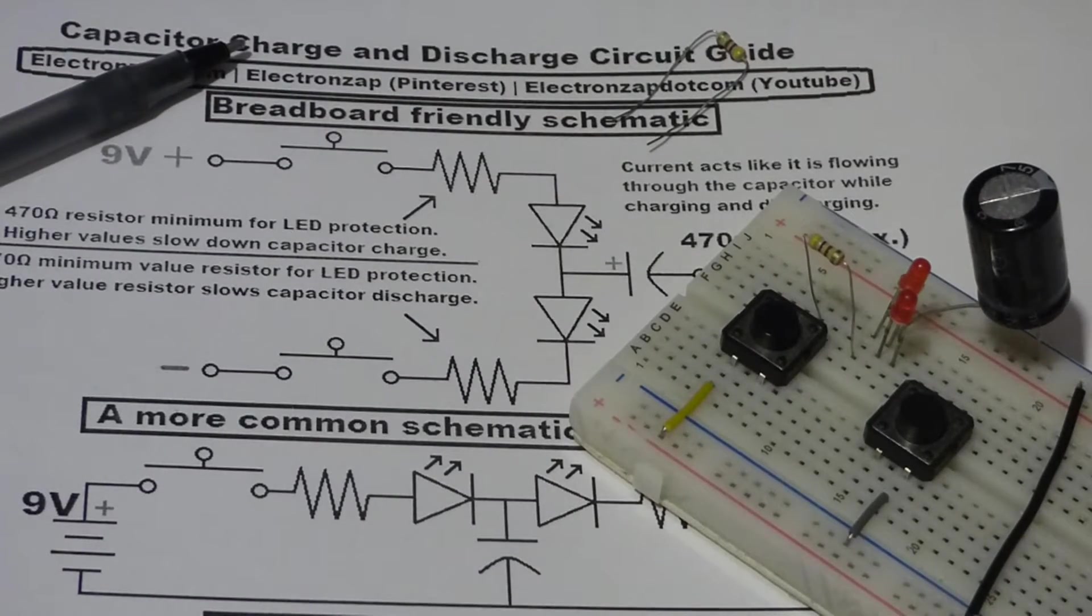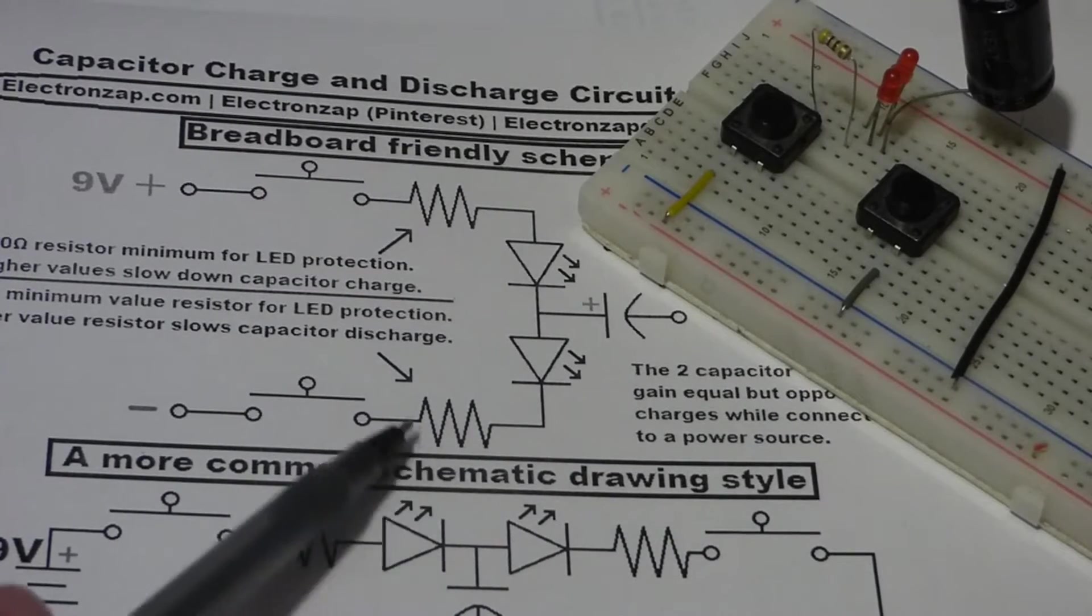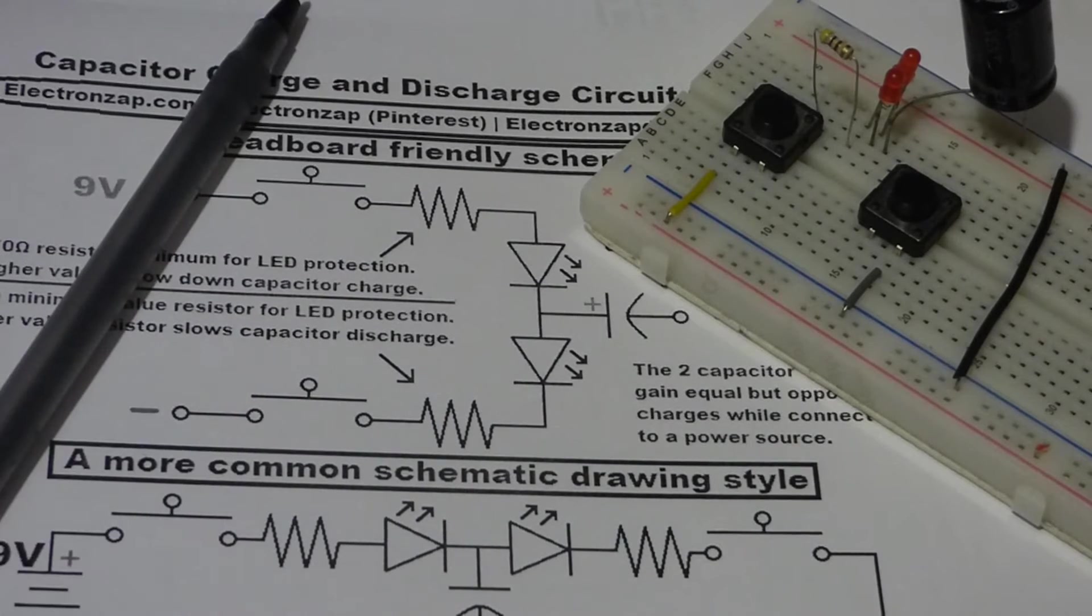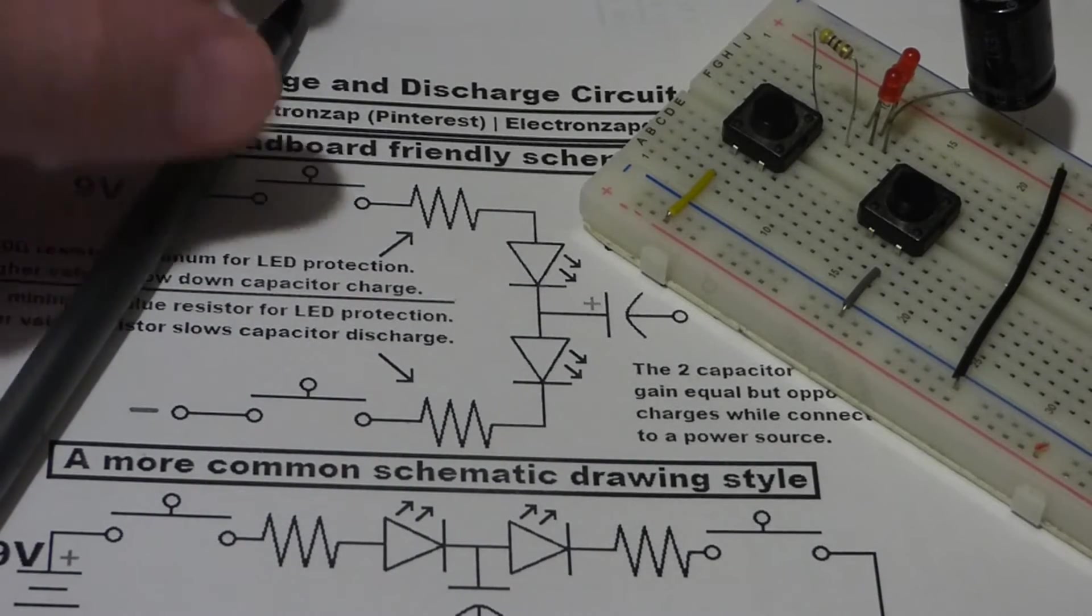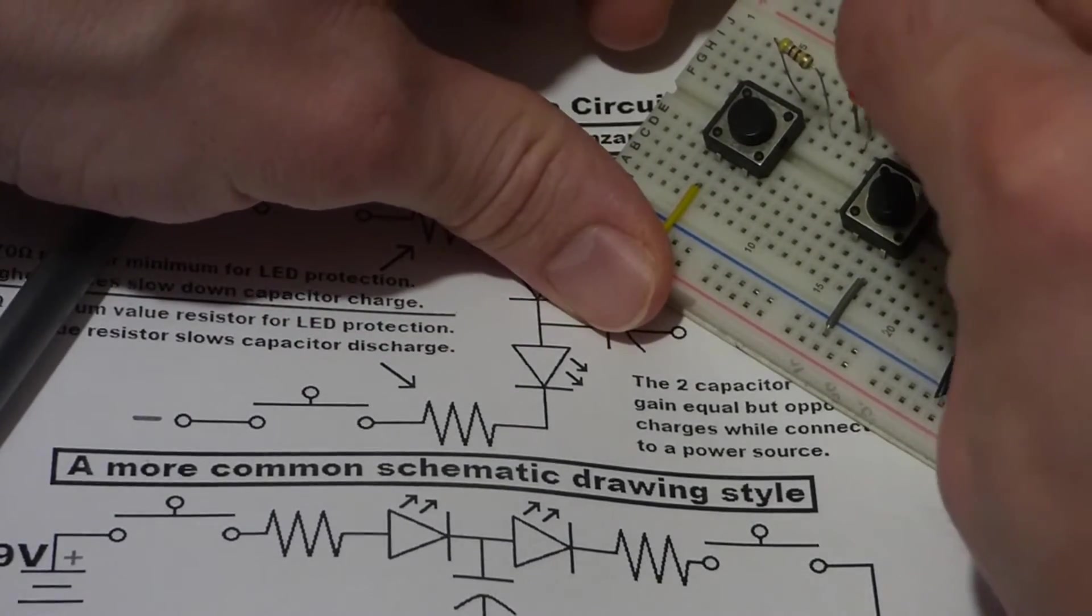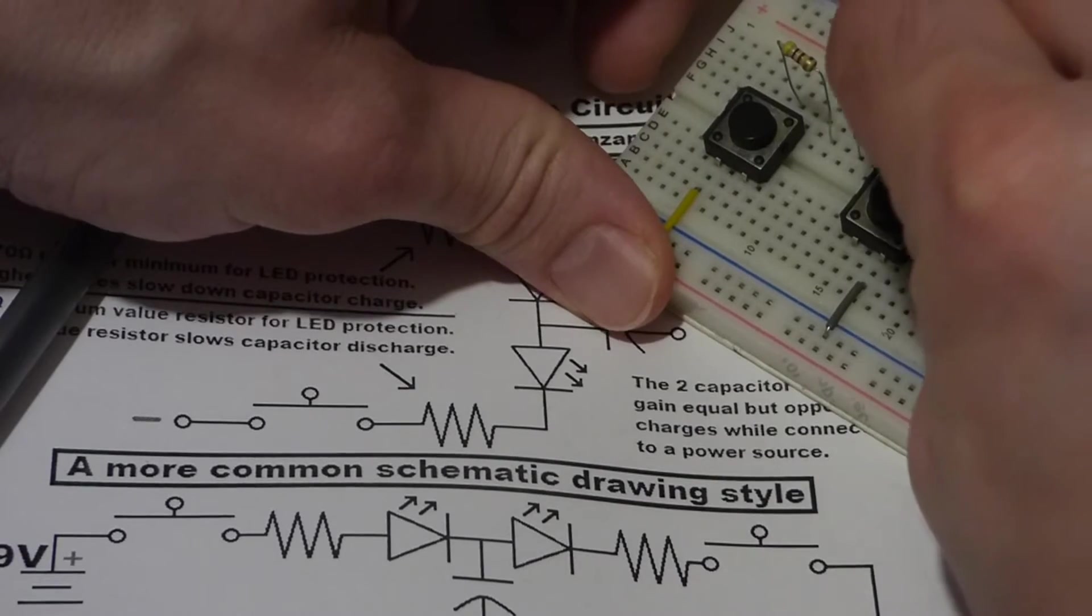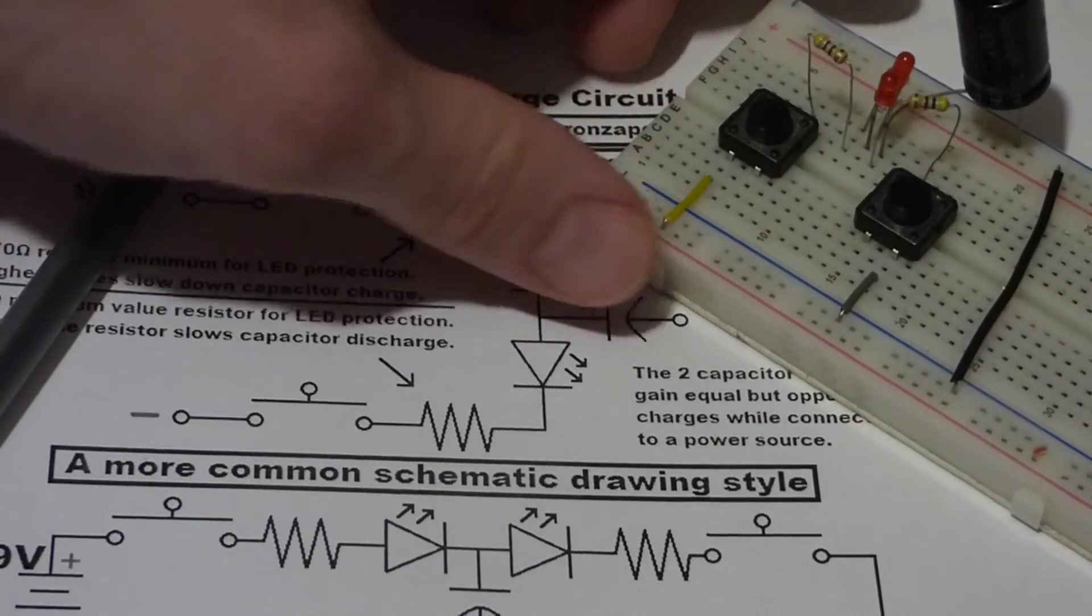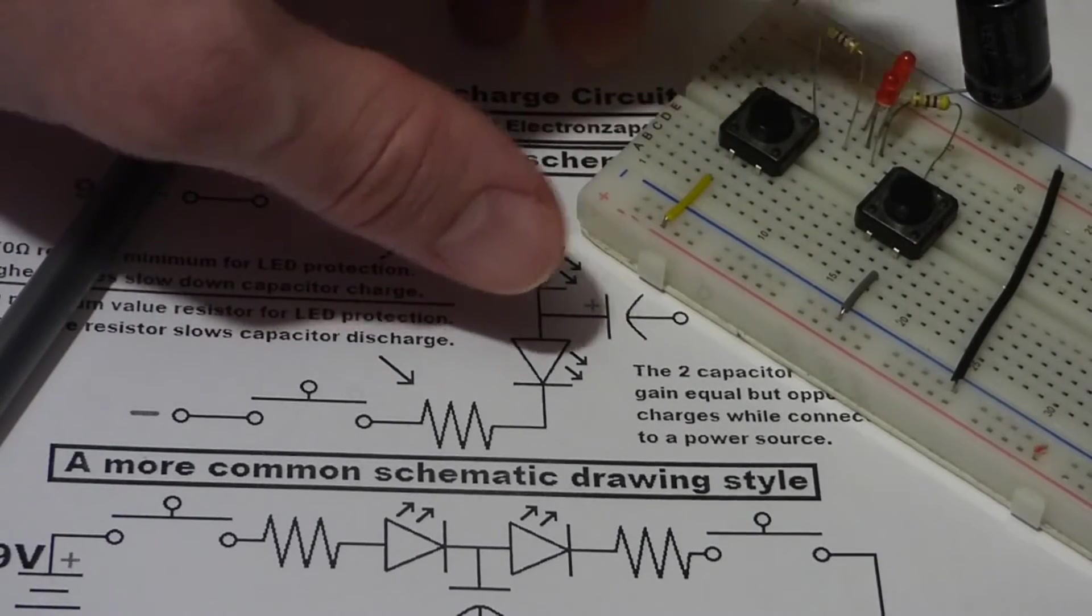And then finally we have the resistor that protects this LED during the discharge. So these are 470 ohm resistors. That's kind of the minimum you want to protect LEDs from a 9 volt battery.